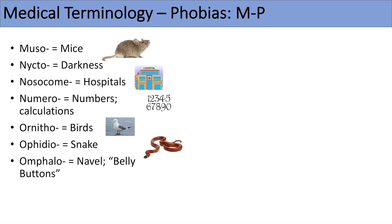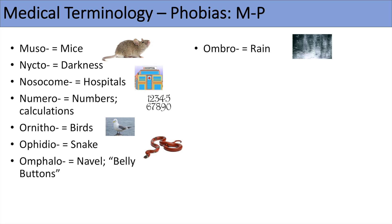The next prefix is omphalo, which means navel or your belly button. So omphalophobia would be a fear of belly buttons — this seems like a very odd phobia. You can think of other words like omphaloseal, which relates to the belly button. The next prefix is ombro, which means rain. So ombrophobia would be a fear of rain.